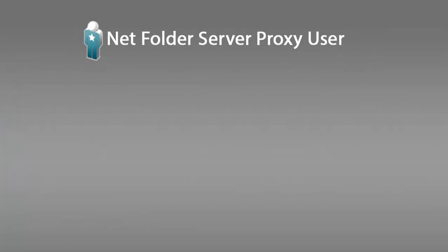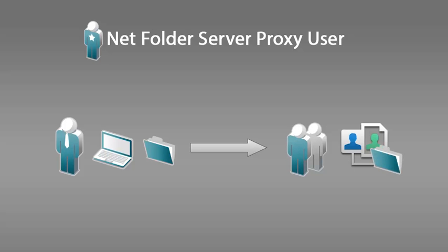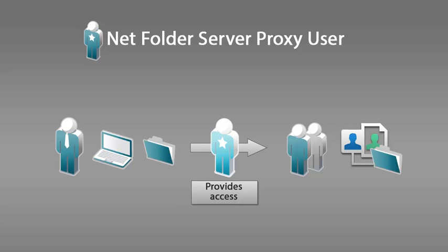The Netfolder server proxy user provides access to files and folders within Filer to users who have received access through a Filer share. For example, suppose an internal user wants to give a group of external users access to a folder on the network. In Filer, he shares the folder with the users, and the users can now log into Filer and access the folder from their shared with me area. The Netfolder server proxy user makes this possible by providing the access to the folder. Any time the external users access the folder via Filer, it is the Netfolder server proxy user who provides the access.